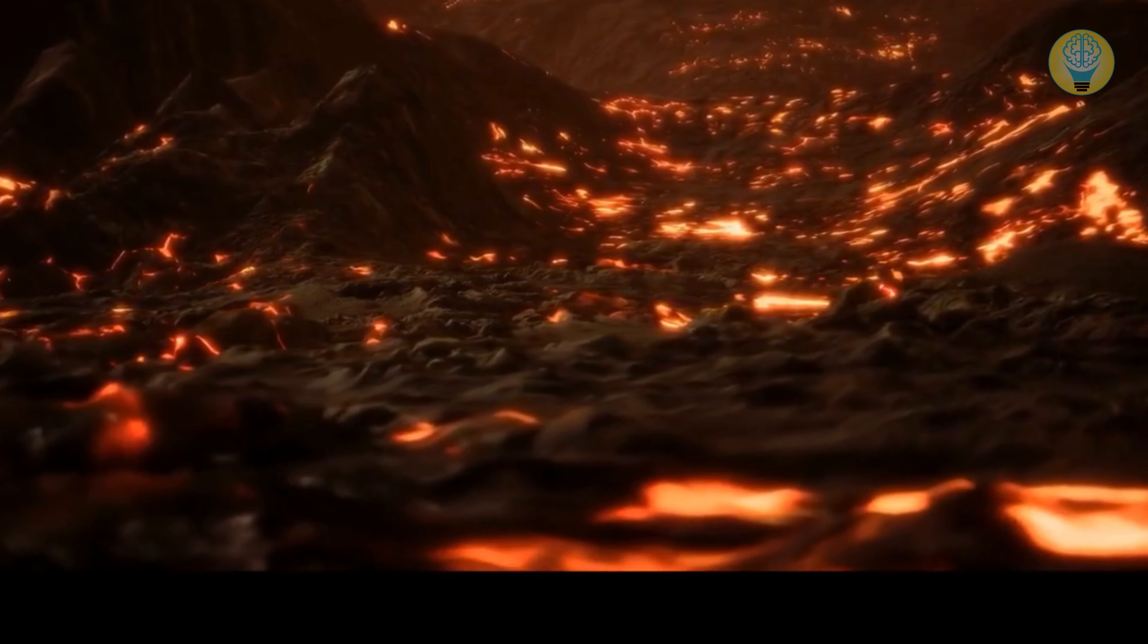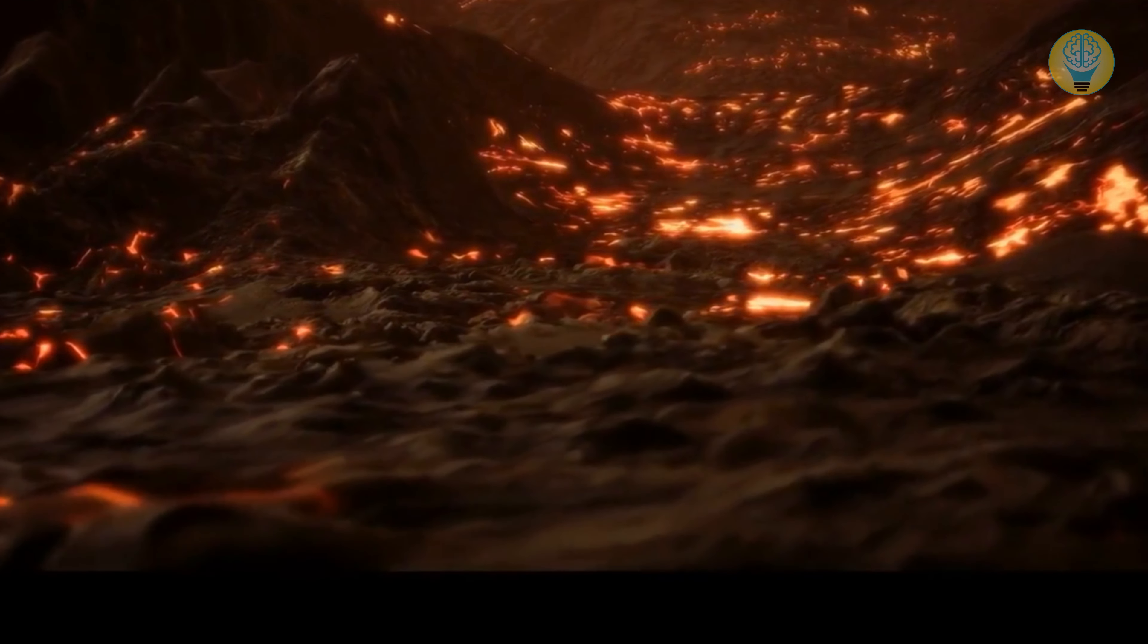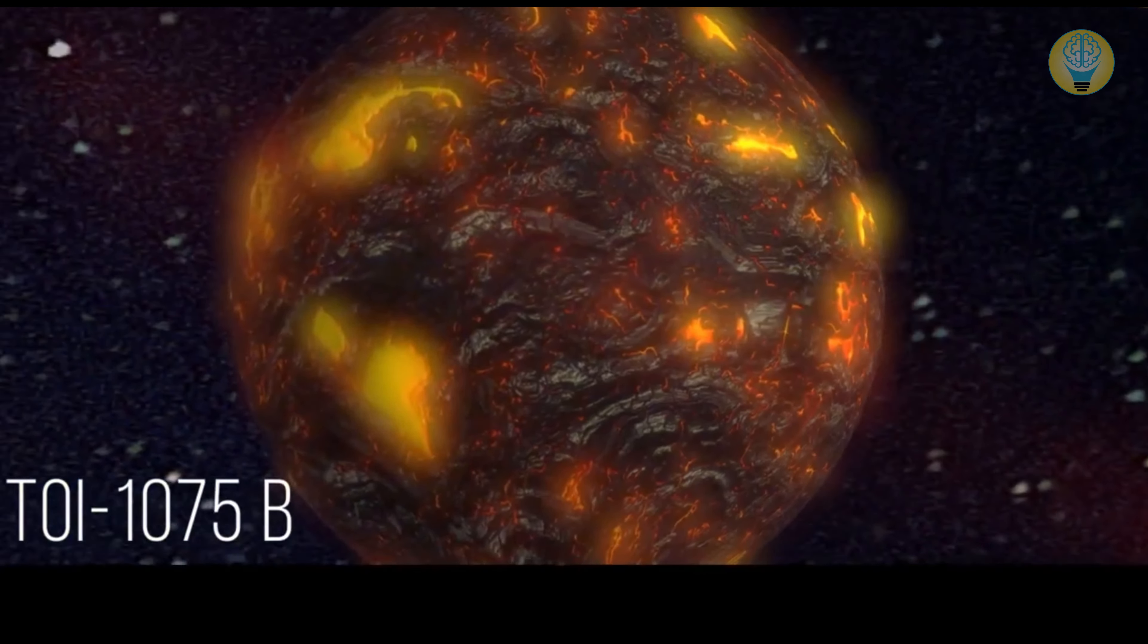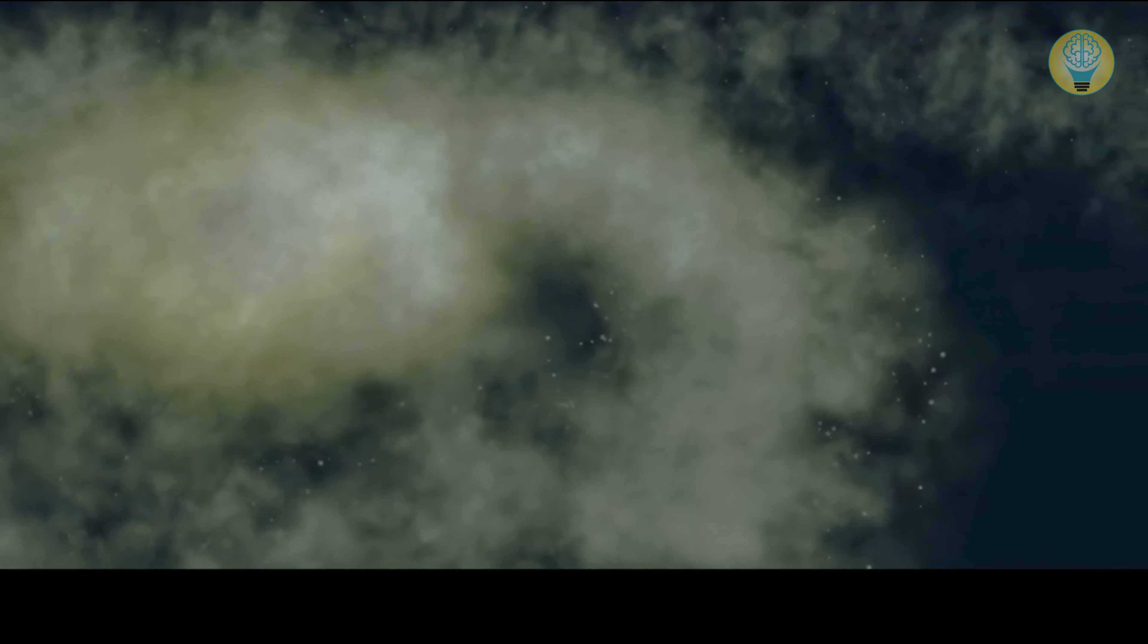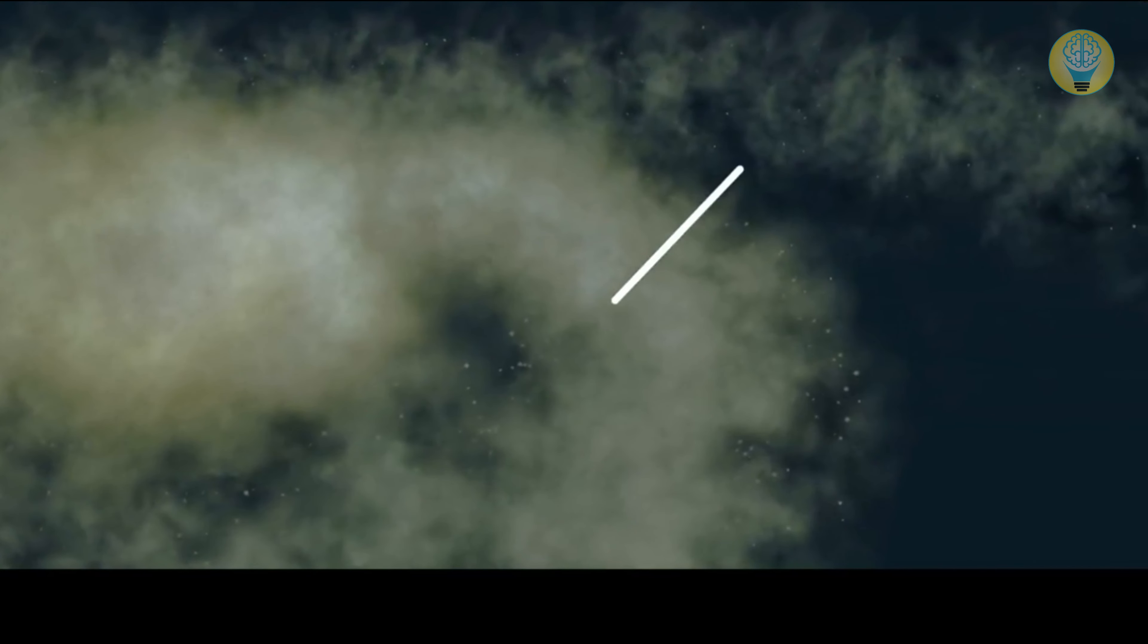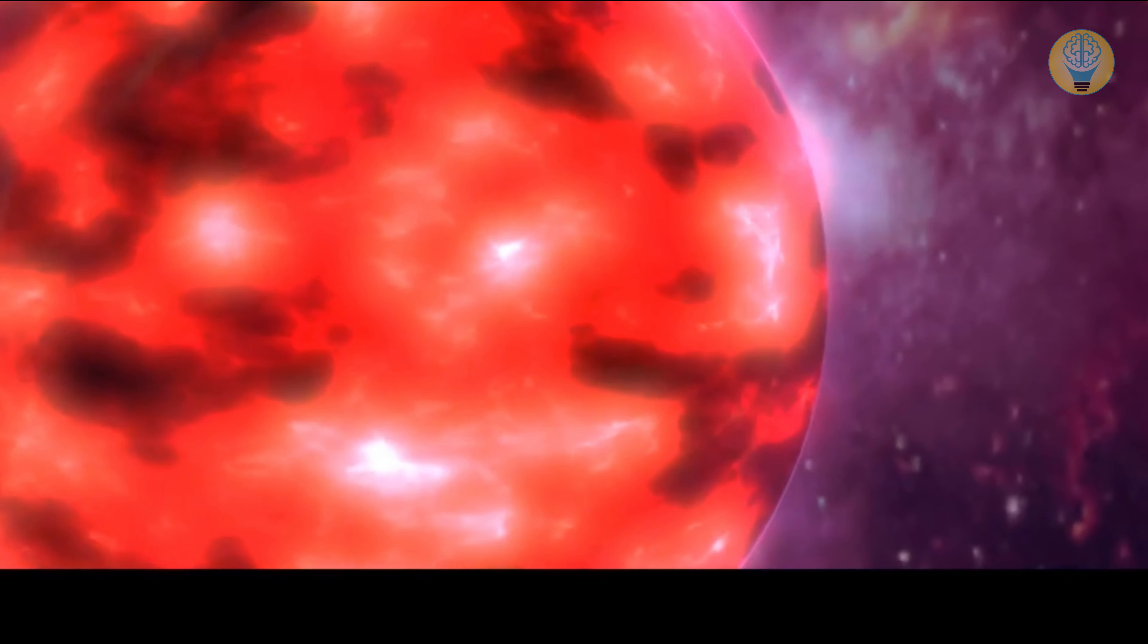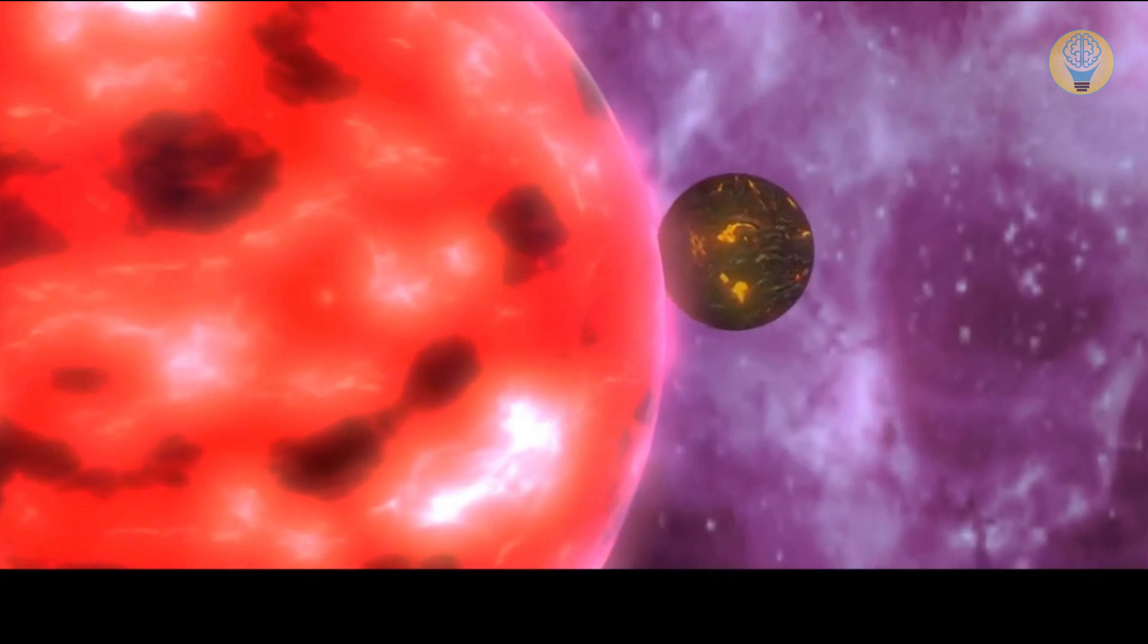Number 3. The Hulk Planet. This world is a place where the surface is covered in molten magma, and the year lasts just half a day. Welcome to TOI-1075b, an exoplanet that's been dubbed the planet Hulk by scientists. Located 200 light-years away, this super-Earth is one of the most massive ever discovered.